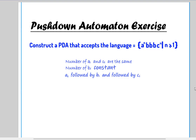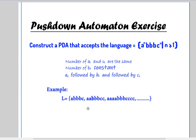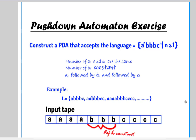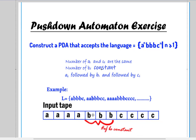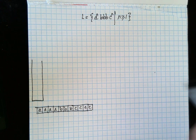So here's this exercise again: construct a PDA that accepts the language A to the power N, then exactly three B's, then C to the power N — where the number of A's and C's are the same and the number of B's is always constant at three. An example of this language can be ABBC or AABBCC — always three B's, with the number of A's equal to the number of C's.